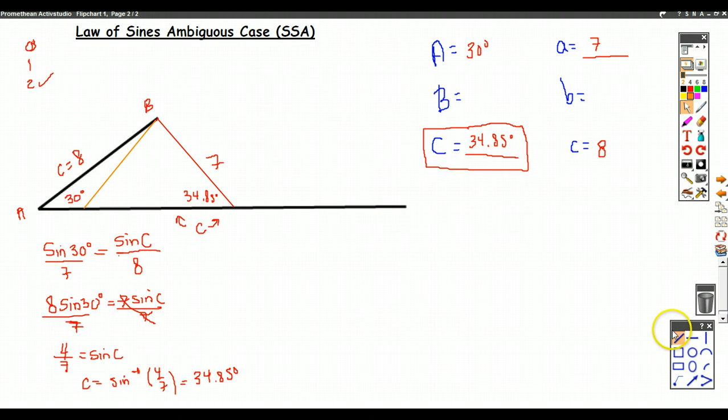So now in this case, this is also 7. This is a whole new triangle. And in this whole new triangle, angle A is still 30 degrees, and side C is still 8, and side A is still 7.